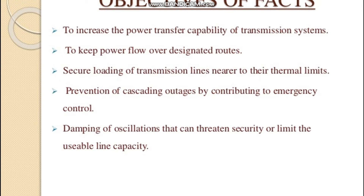Voltage and frequency drop affects the generating plants and can collapse the overall system. We need to estimate problems due to temperature and stability, and keep them within limits. If they exceed limits, the overall transmission system collapses. To increase reliability and minimize losses, the overall transmission system is interconnected. The main purposes of interconnection are: to improve stability, improve power transfer capability, increase system efficiency, and prevention of cascading outages through emergency control.